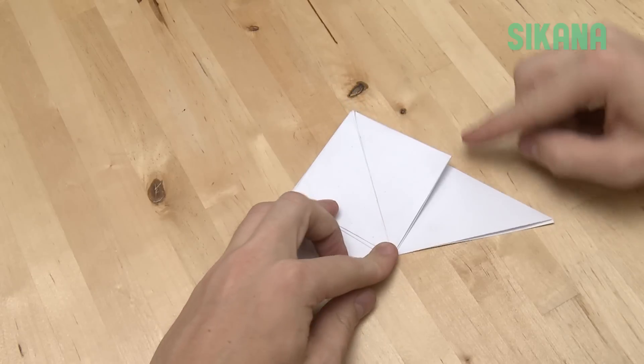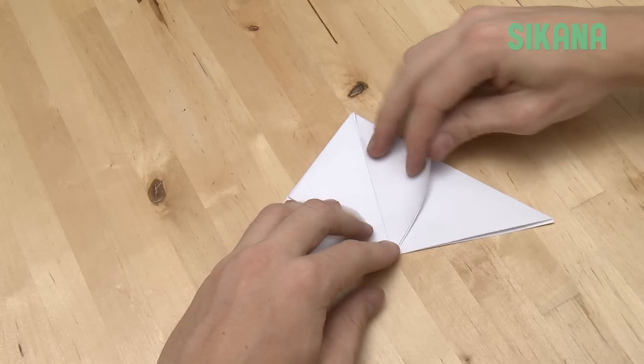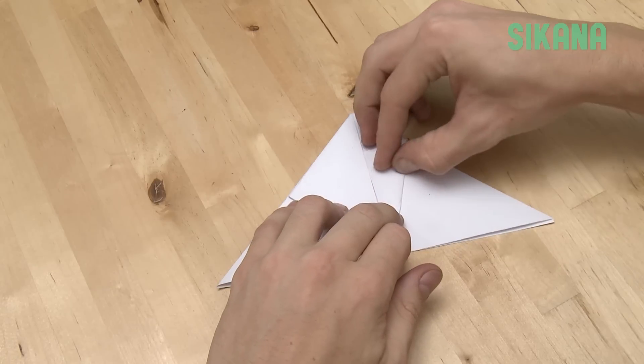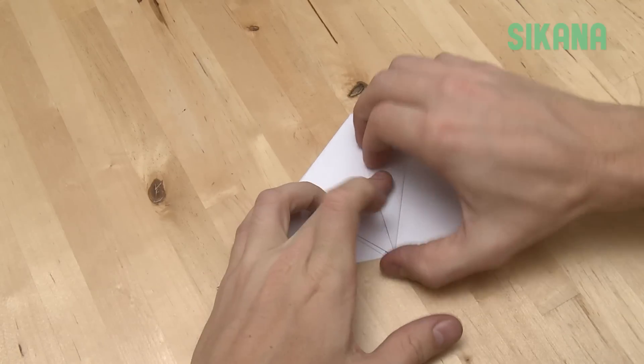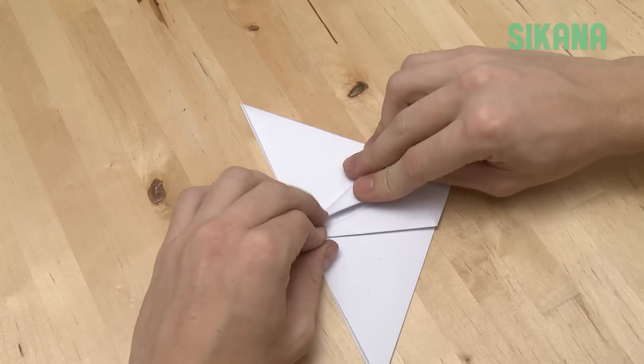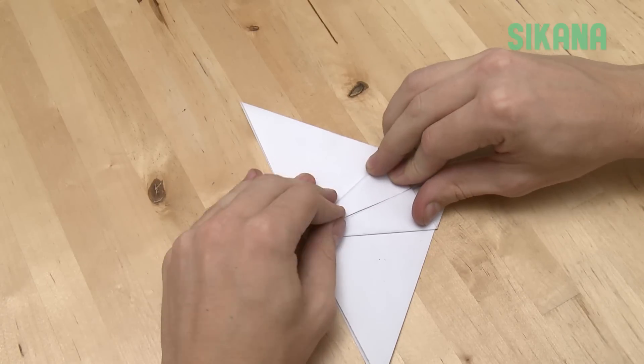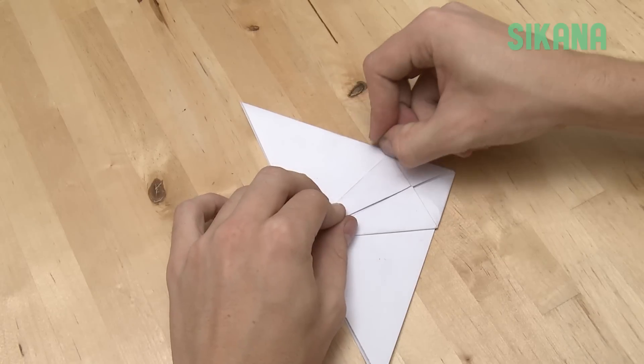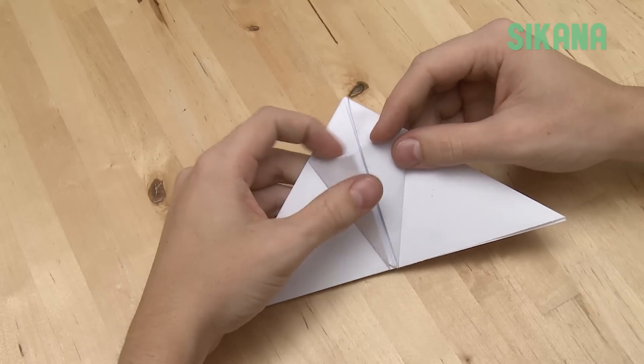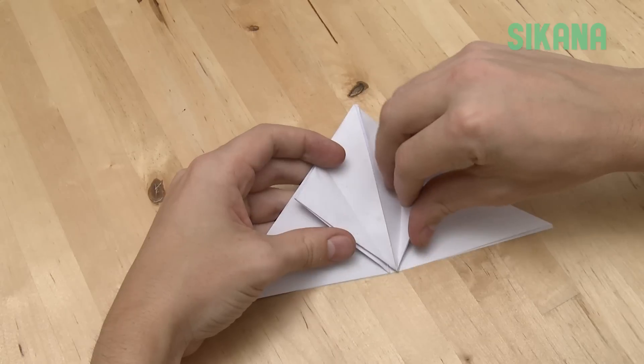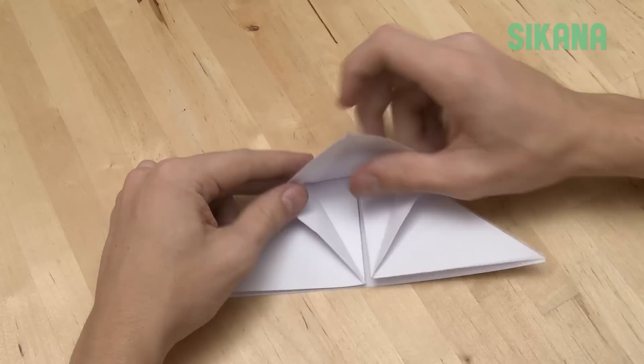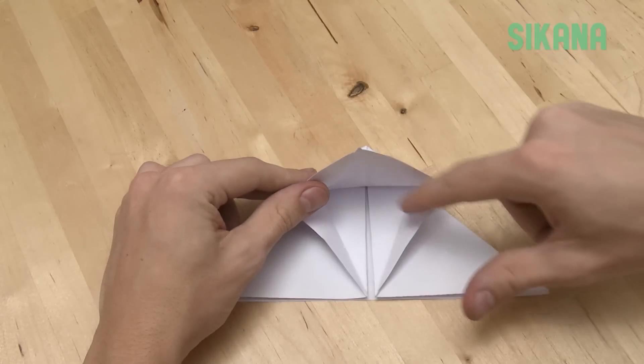Now we will fold this part onto the center line. Repeat for the other side. Now fold the last two folds and open the middle part like this. Now fold both sides inward. This part here and that part there.